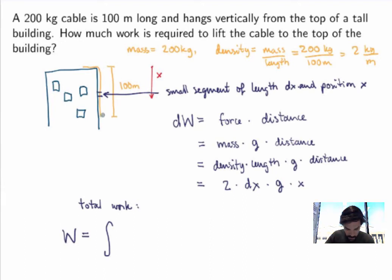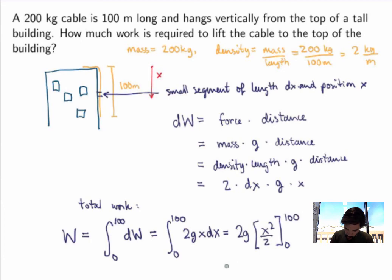Now I have to decide from where to where I want to integrate. Now the segments, the cable here starts at the top and ends at 100 meter. So I want to integrate from 0 to 100 meter in my coordinate system of the work done to lift each segment. So that gives me the integral from 0 to 100 of 2gx dx. 2 and g are constants. I bring them out, get x squared over 2 between 0 and 100, which is just equal to g times 100 squared, which I guess is 10000 times g.